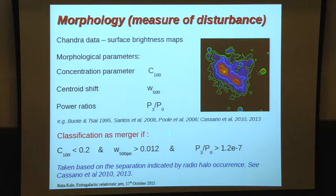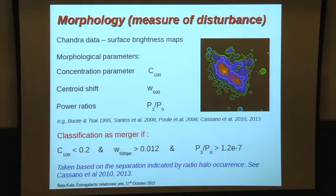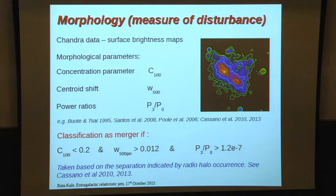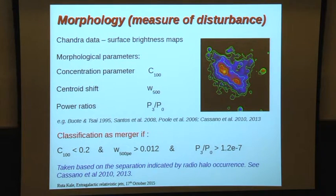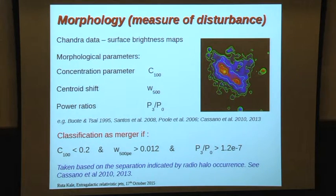For morphology, we used quantitative parameters as proxies for cluster disturbance: the concentration parameter, centroid shift, and power ratios, all measured from Chandra X-ray maps. For example, in a double cluster these parameters quantify how disturbed the morphology is. Based on these parameters, we classify clusters into merging and relaxed categories.